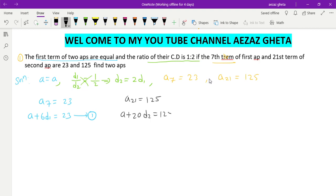d2 equals 125. Now if you see, we have d2 = 2d1, right? So a + 20d2, which is nothing but 2d1, equals 125 as equation 2. Now from equations 1 and 2, we can use the elimination method: a + 6d1